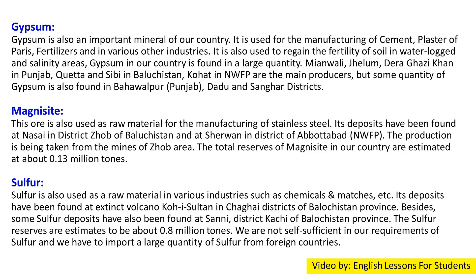Sulfur is used as raw material in various industries such as chemicals and matches. Its deposits have been found at the extinct volcano Koh-e-Sultan in Chagai district of Balochistan province. Some sulfur deposits have also been found in Surab district of Balochistan. The sulfur reserves are estimated to be about 0.8 million tons. We are not self-sufficient in sulfur and have to import a large quantity from foreign countries.